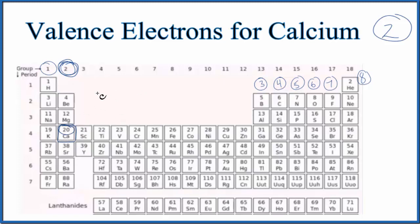If we write the electron configuration, that looks like this. If we add up all the numbers on top, that equals 20.